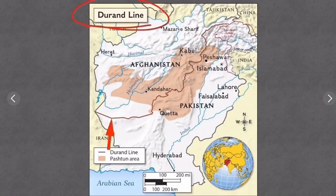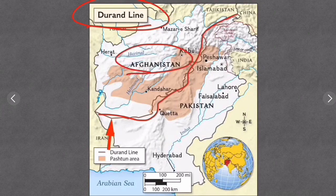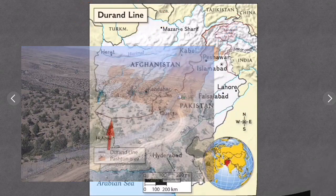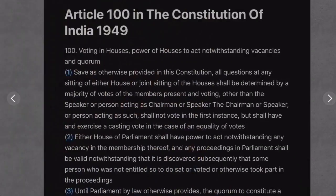Next: what is the Durand Line? The Durand Line is an international border between Afghanistan and Pakistan.